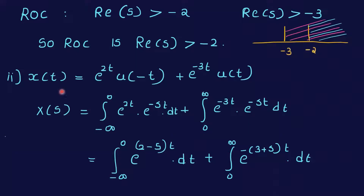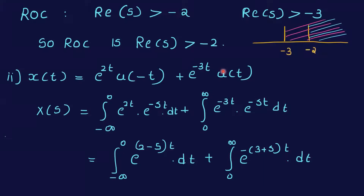For the second problem: x(t) = e^(2t)u(-t) + e^(-3t)u(t). This is a two-sided signal. X(s) = integral from -infinity to 0 of e^(2t)e^(-st) dt plus integral from 0 to infinity of e^(-3t)e^(-st) dt.